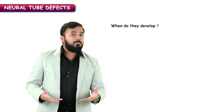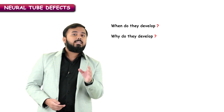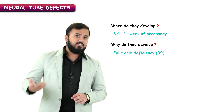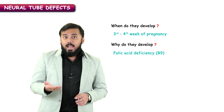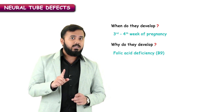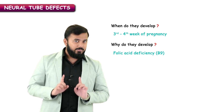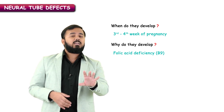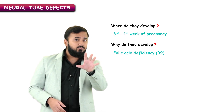One of the very important topics in clinical neuroanatomy that we'll be discussing today is neural tube defects. If you come across these neural tube defects in anatomy, when do they develop and why do they develop? They develop during the third to fourth week of pregnancy, mainly because of folic acid deficiency, which is also called vitamin B9. Every pregnant female should receive enough folic acid during her pregnancy to prevent these neural tube defects.